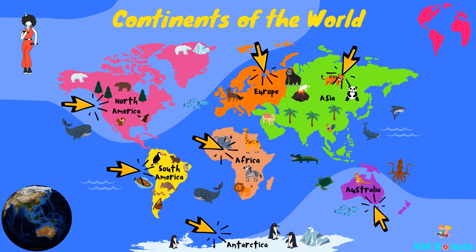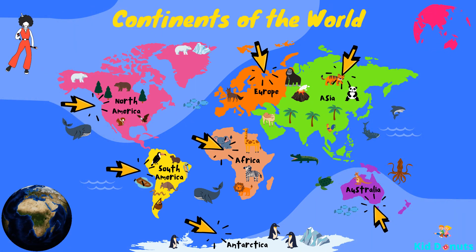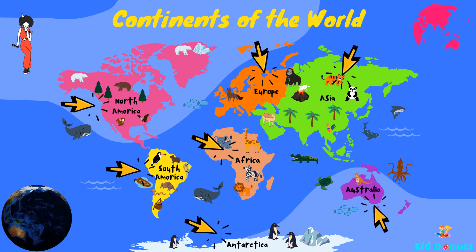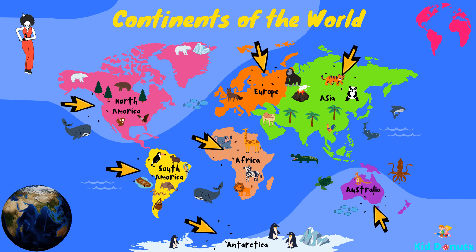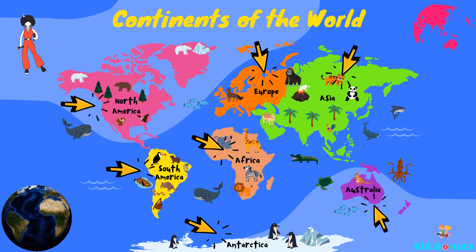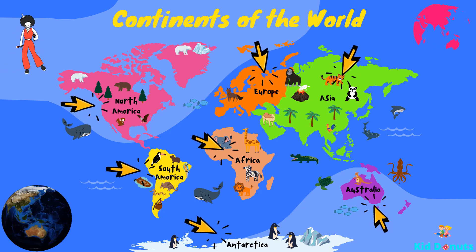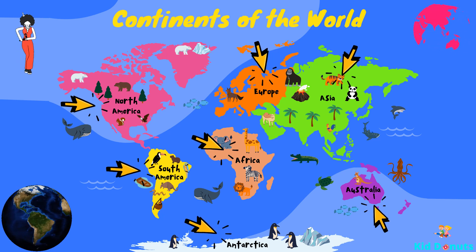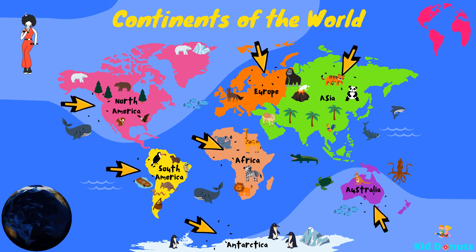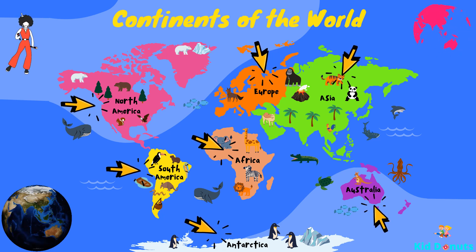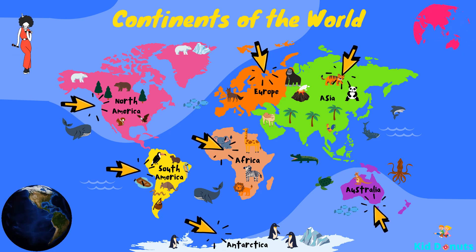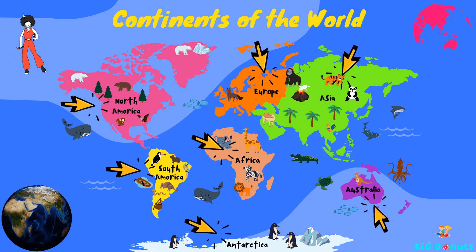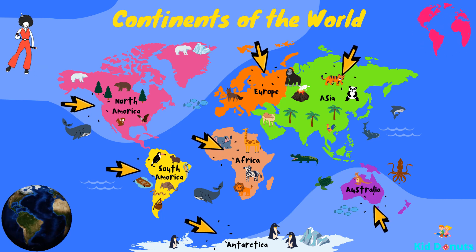This picture shows the world map with pointers pointing to each continent. Continents make up most, but not all, of Earth's land surface. The ocean covers almost three-fourths of Earth. The area of the ocean is more than double the area of all the continents combined.